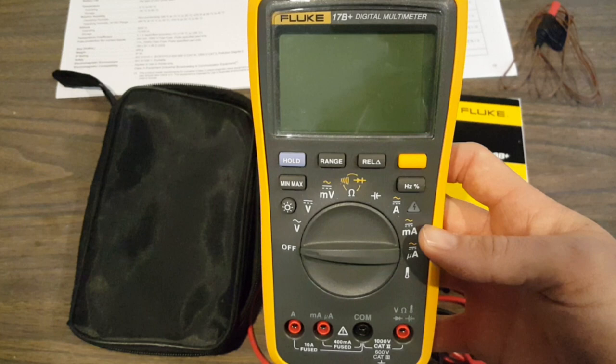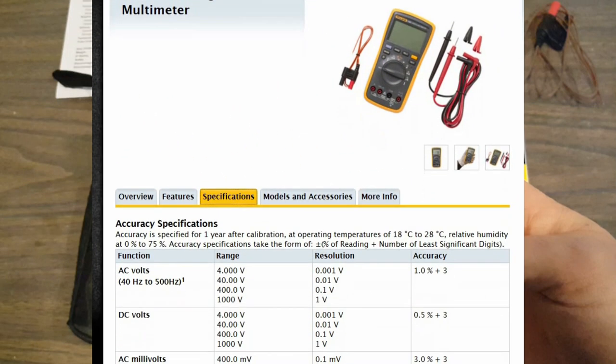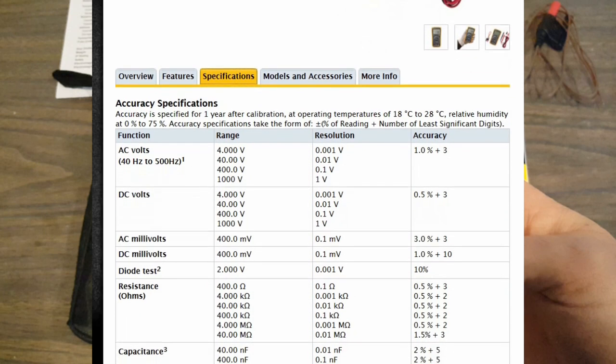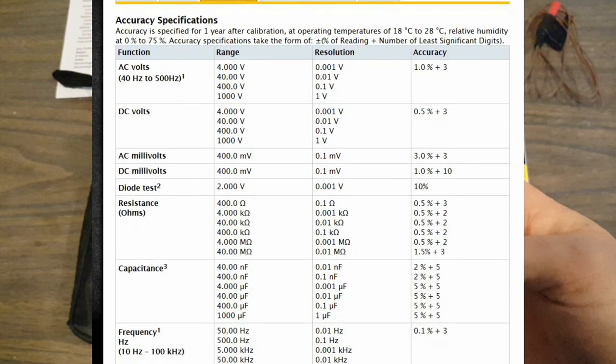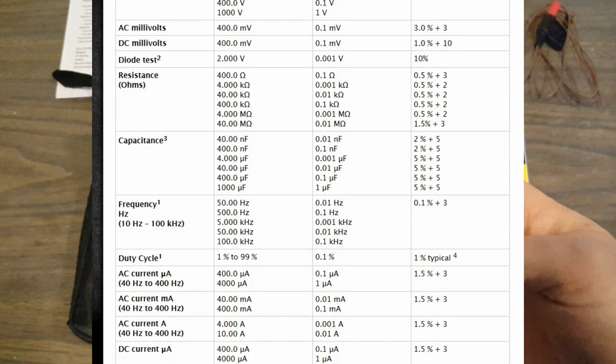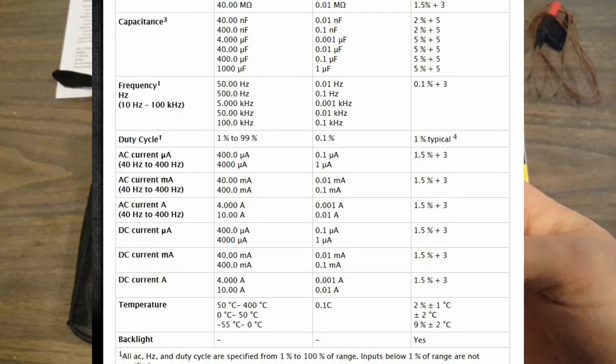Of course, with all these features, you want to be fairly certain the numbers you get are accurate. The 17B Plus has reasonable accuracy in all the ranges. AC volts, 1%. DC volts, 0.5%. AC millivolts, 3%. DC millivolts, 0.5%. Resistance, between 0.5% and 1.5%. Capacitance, between 2% and 5%. Frequency, 0.1%. Duty cycle, around 1% for 60 hertz signals.